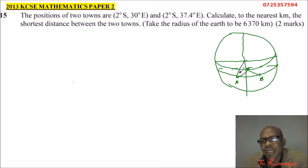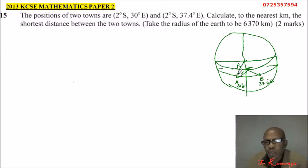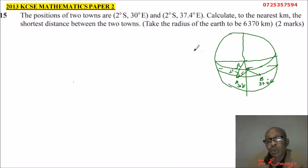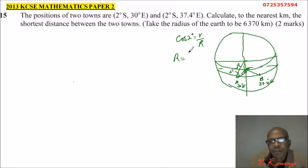We draw a line from the center to help us get the formula. This is the radius of the earth, and this is the radius of the arc at 2 degrees south. Because there is a right angle here, we can say the cosine of 2 degrees equals the adjacent side, which is the small radius r, divided by the radius of the earth R — the hypotenuse. Therefore, small r equals R times cosine of 2 degrees.